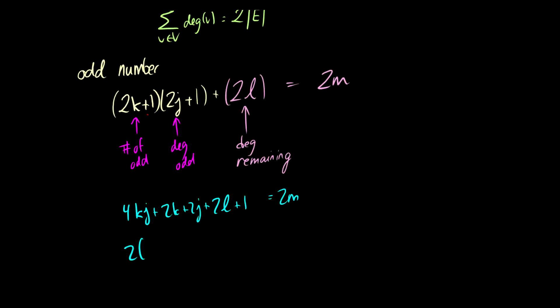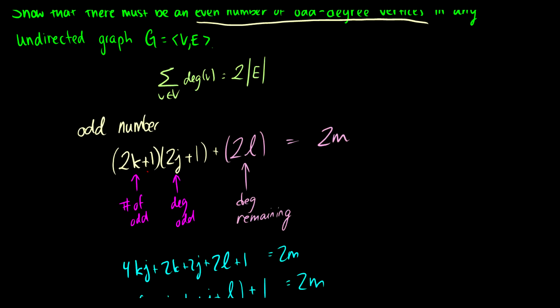By contradiction, we can't have an odd number of odd degrees. This might seem a little formal, but intuitively: the sum of all degrees has to be even since it equals two times the number of edges, and having an odd number of odd degrees would make that sum odd. So it's a nice number-theoretic way of showing it.